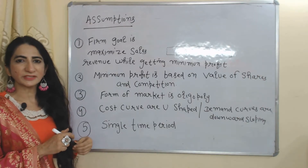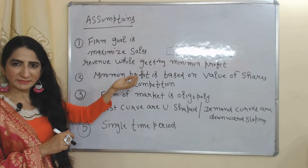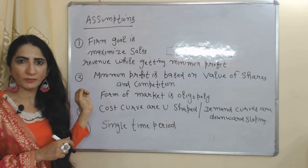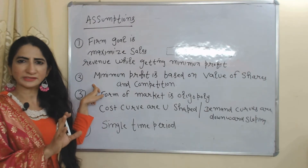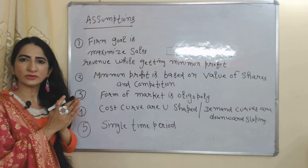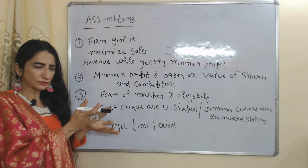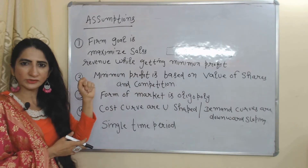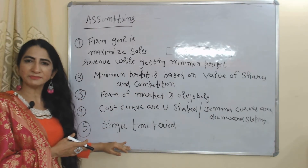Now we will see the assumptions of this model. The goal of the firm is to maximize sales revenue while getting a minimum amount of profit. The minimum amount of profit depends on the value of shares and competition. The form of market is oligopoly, with U-shaped cost curves and downward-sloping demand curves. This model is based on a single time period.